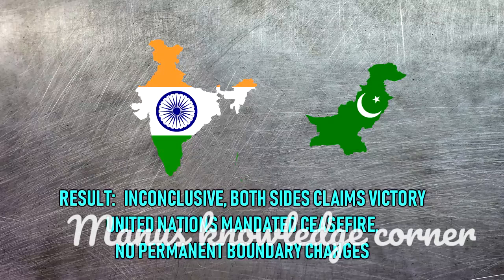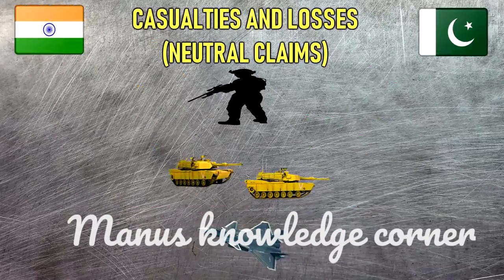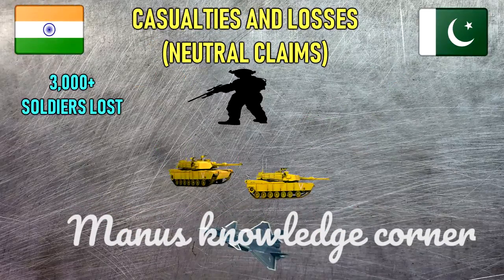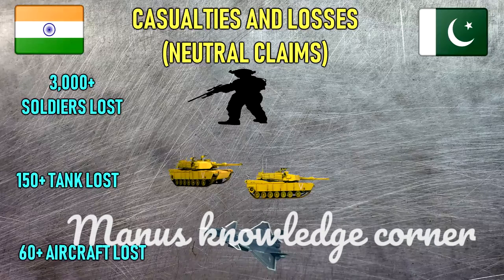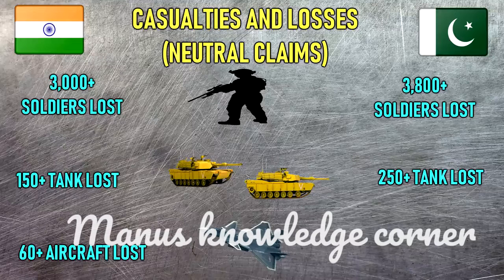United Nations mandated ceasefire; no permanent boundary change. Casualties and losses — neutral claims: India — 3,000 plus soldiers killed, 150 plus tanks lost, 60 plus aircraft lost; Pakistan — 3,800 plus soldiers killed, 250 plus tanks lost, 20 aircraft lost.